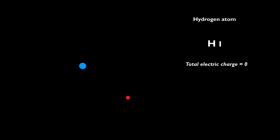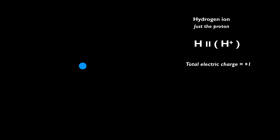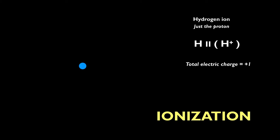Here is a very schematic representation of a nitrogen atom. As all atoms, it has a nucleus and electrons orbiting around it. Hydrogen is the simplest element in nature — its nucleus is usually just a proton. An atom has no net electric charge, as the proton is plus one and the electron minus one. But energetic radiation can make the hydrogen atom lose its electron. Now it is a hydrogen ion — just the proton — with electric charge plus one.